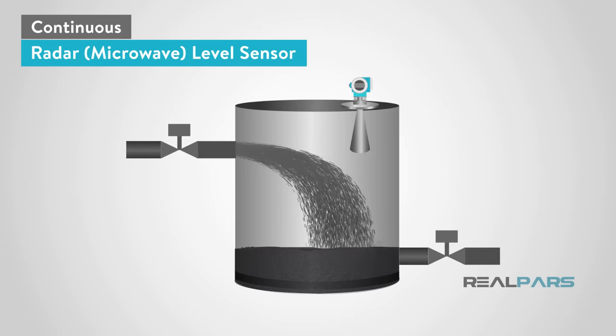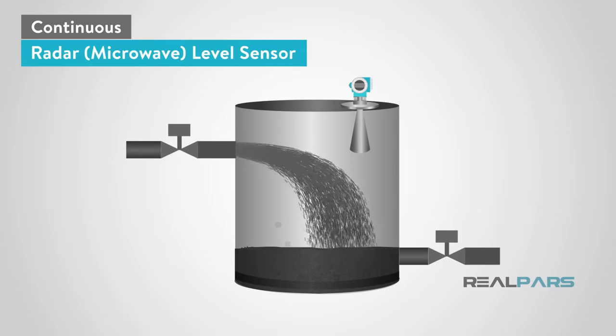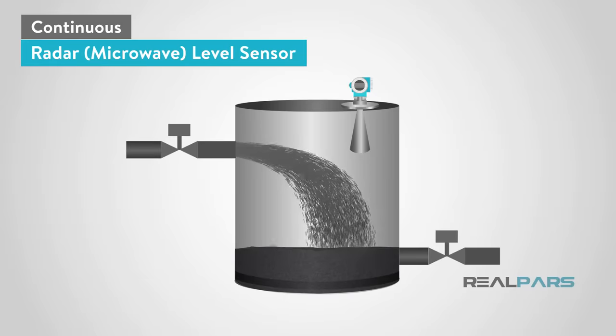If we go back to our shingle manufacturing plant example, a radar level sensor could be an ideal solution. Much like the ultrasonic sensor, radar sensors are ideal for hot liquid storage tanks.